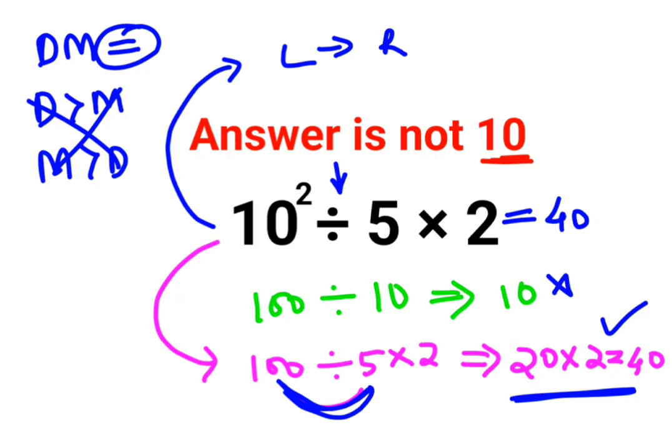Now you might be worried that when the answer can be 10. The answer can be 10 only if they had given something like this. 10 square divided by 5 multiplied by 2 was given in bracket. Then we know that precedence of bracket is more than division or multiplication. So this has to be done first. So that is why then this logical step follows.